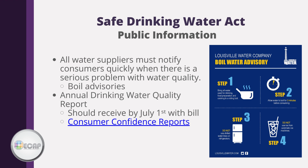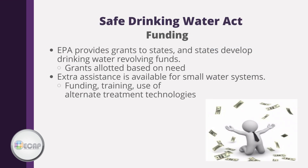Consumer confidence reports are also available on the EPA's website when released. The EPA provides grants to states, which the state uses to develop drinking water state revolving funds. The grants are based on need, and extra assistance is available for small water systems to help with funding, training, and the use of alternate treatment technologies.